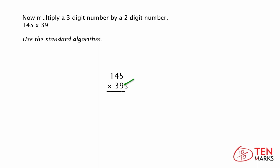And then you're going to multiply 145 by 30. Let's look at 145 times 9 first. 9 times 5 is 45, so you're going to place the 5 here in the ones column and carry the 4.